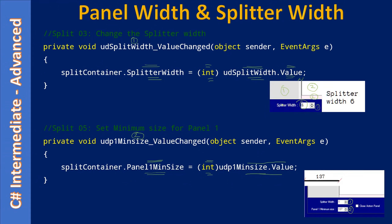We are setting the minimum size with the value taken from this NumericUpDown control — say 137. That means the user cannot minimize panel 1 beyond this limit; they cannot move the splitter in that direction once 137 is reached. Minimum size tells panel 1 that you cannot reduce its size beyond this limit, but you can increase it. When you reduce the size, this is the minimum size required for this panel.